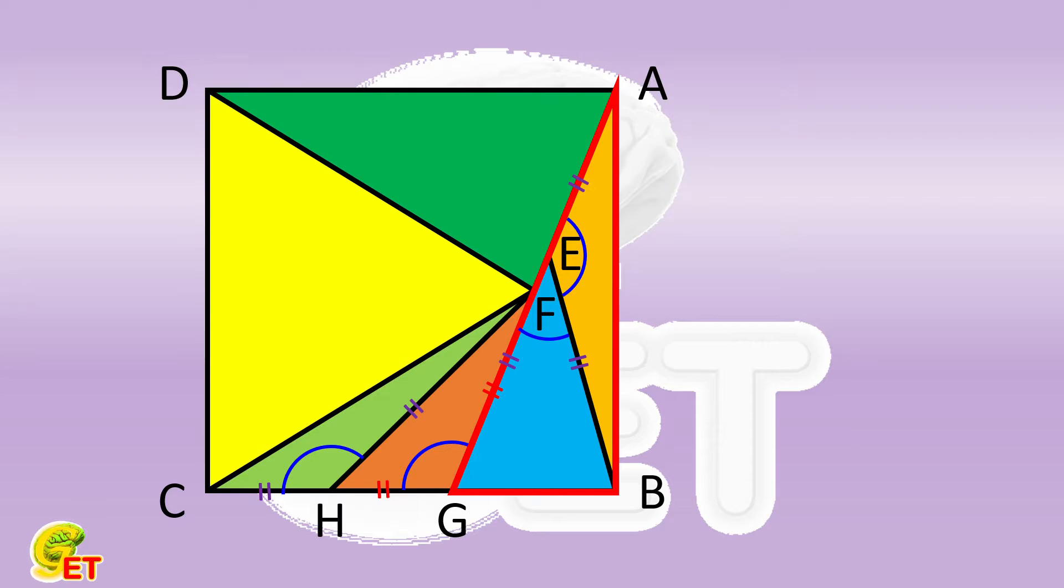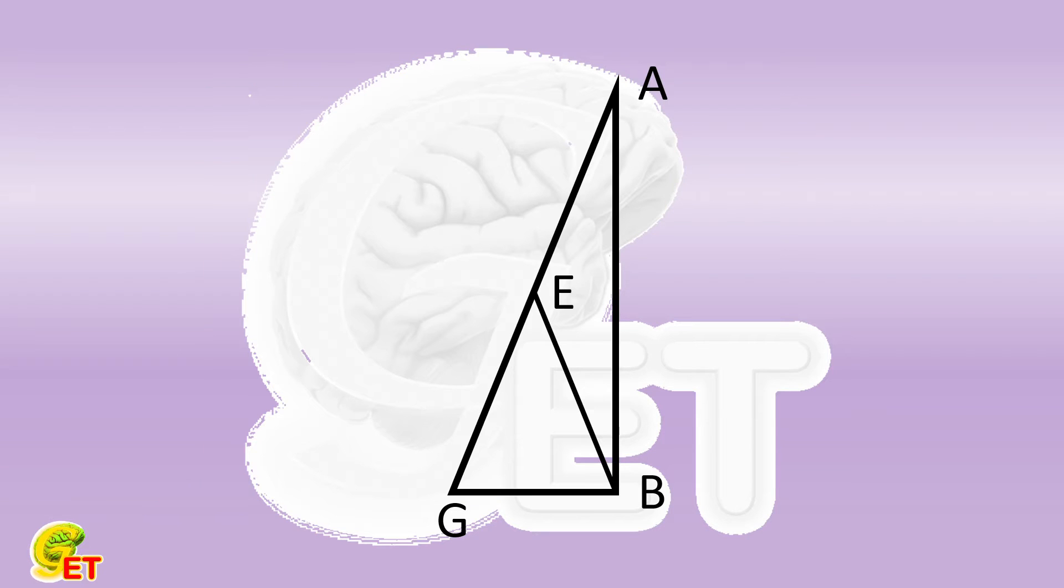But the question is, is this the only possibility? Let's take a close look. It is certain that AB will not be shorter than BG.